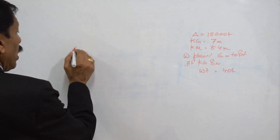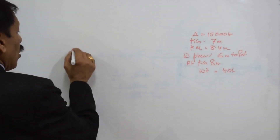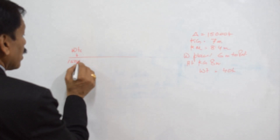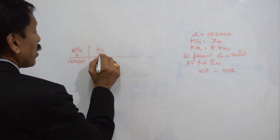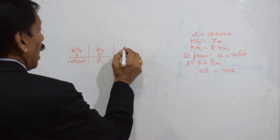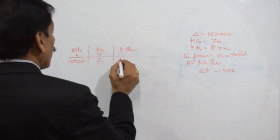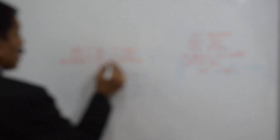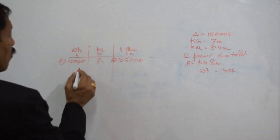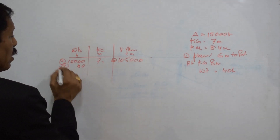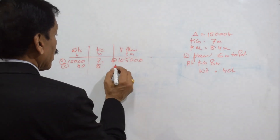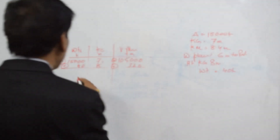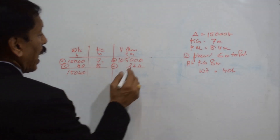The KG by moment calculation: in the first column there are weights in tons, starting with 15,000 tons at a KG of 7 meters, giving a vertical moment of 105,000 ton-meters. Then we place a weight of 40 tons at a height of 8 meters, giving a vertical moment of 320 ton-meters. The resultant weight is 15,040 tons and the total vertical moment is 105,320 ton-meters.